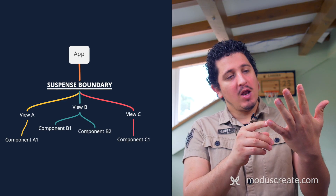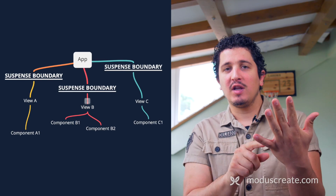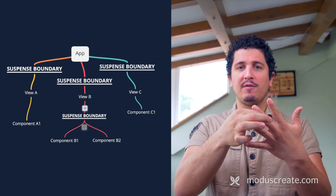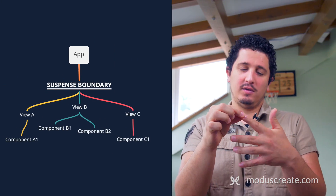So let's talk about this boundary. I think the easiest analogy I can use is my hand. Let's talk about my hand as an application. Maybe the whole hand can be a Suspense boundary, maybe each of the fingers can be a Suspense boundary individually, or maybe even every knuckle can be a Suspense boundary on its own.